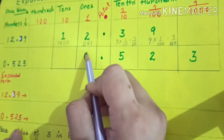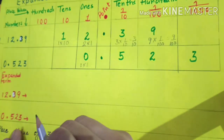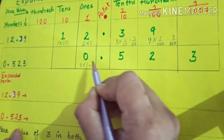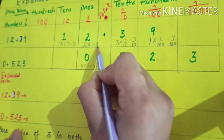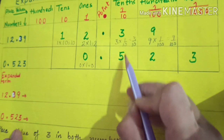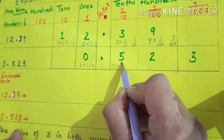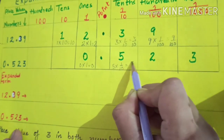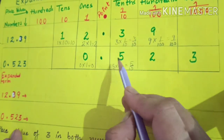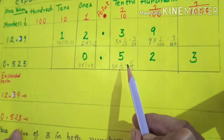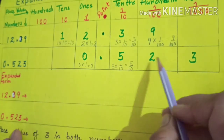Zero is at the ones place, so zero multiplied by one gives the place value of zero, which equals zero. Five is at the tenths place, so five multiplied by one over ten equals five over ten, which is five-tenths. These are all the place values I have written. Two is at the hundredths place.